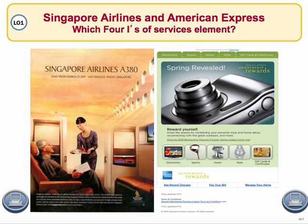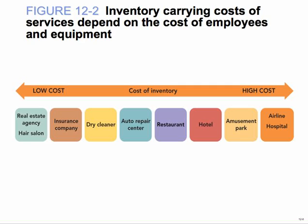Look at the service elements of airlines — this is a good graph. Cost of inventory: incredibly high cost of inventory for hospitals to have extra beds. Low cost, because there's really no inventory for a hair salon. They use products, but they're not storing them for resale. And real estate agencies are just agents — they don't own what they sell.